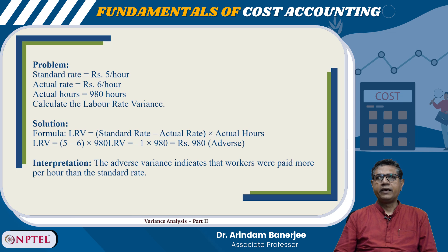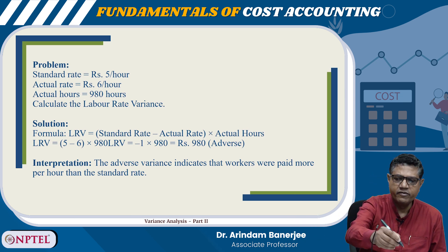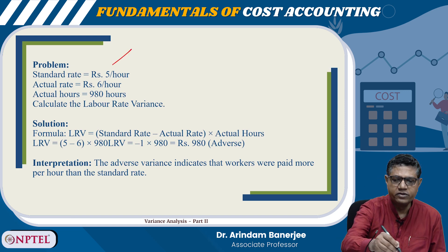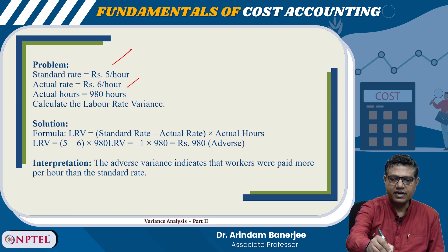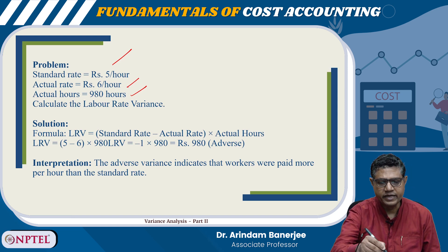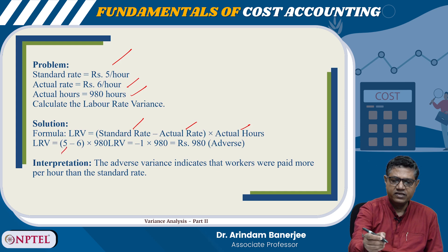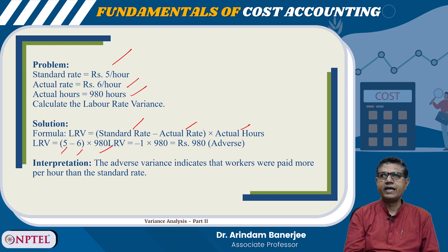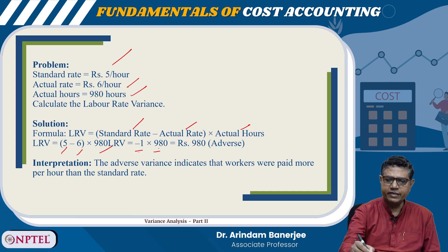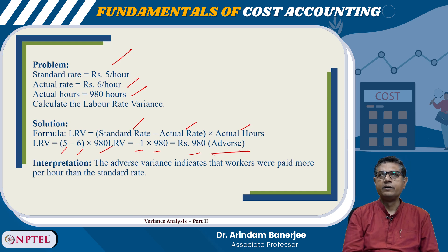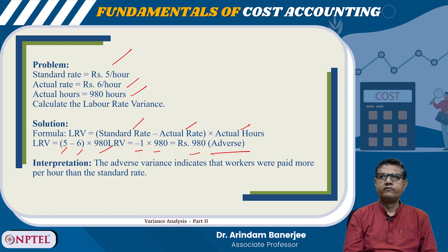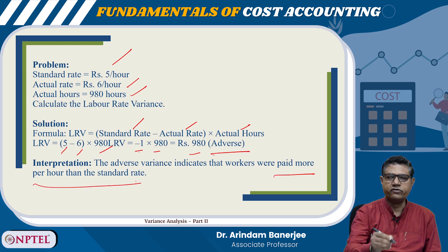The standard rate is 5 per hour, actual rate is 6 per hour, and actual hours is 980. So: (5 − 6) × 980 = −1 × 980 = −980, which is adverse. The reason is the actual rate is more than the standard rate. The adverse variance indicates the workers are paid more per hour than the standard rate.